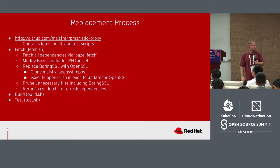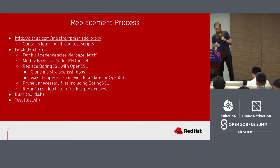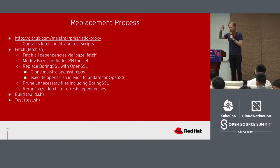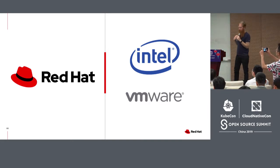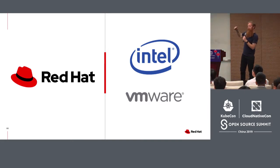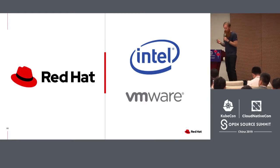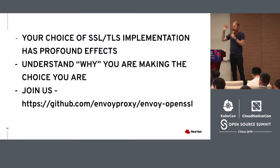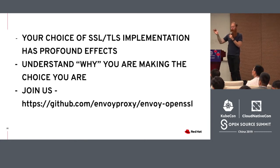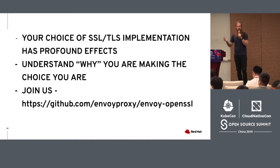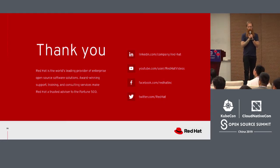Bill has documented the replacement process here. We are going to publish the slides on Skedge. This work is not just being done by Red Hat — there was the request from folks at Akamai for this sort of support. There's also some support coming from Intel and VMware. There are a number of organizations that want to see this for very similar FIPS-related reasons. To summarize: the choice of SSL or TLS implementation that you use has profound effects. Understand why you're making the choice that you are. Thank you very, very much.